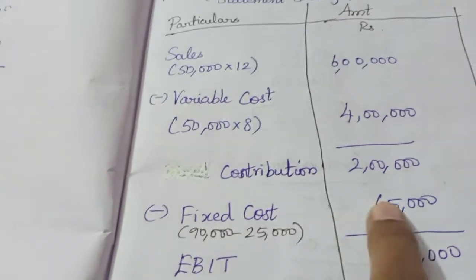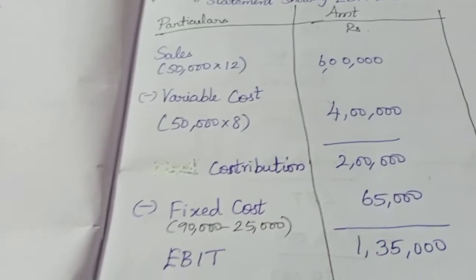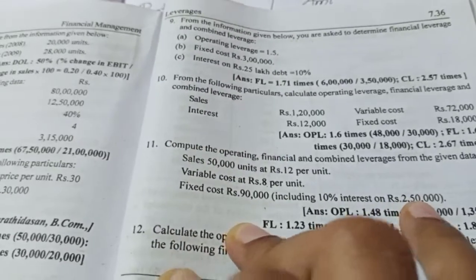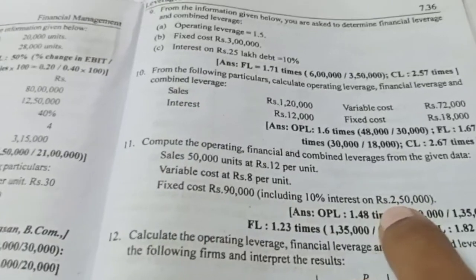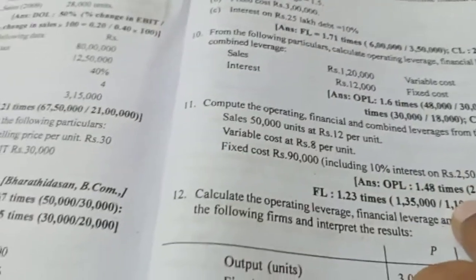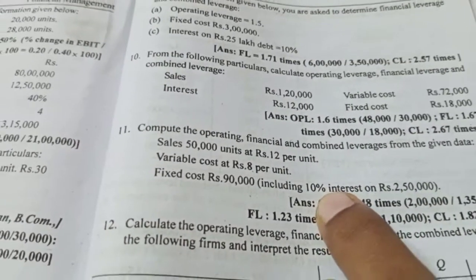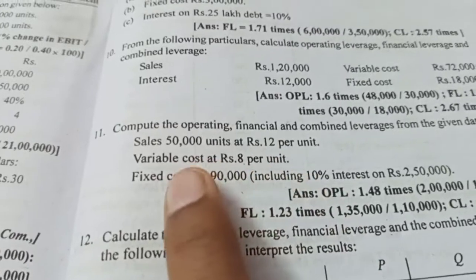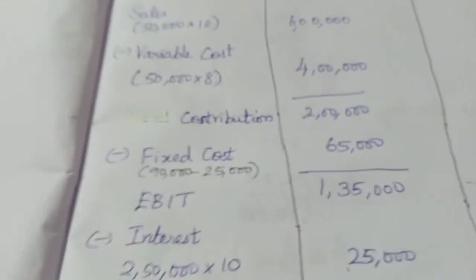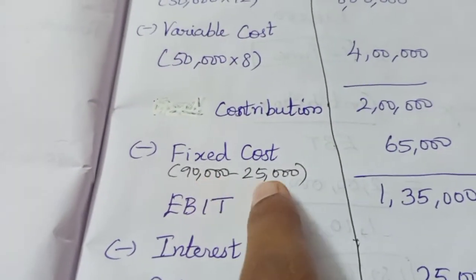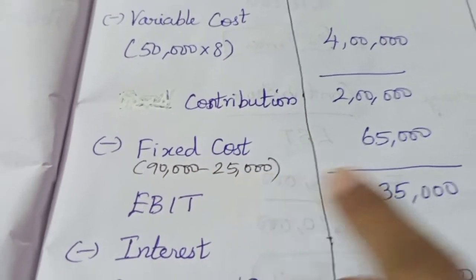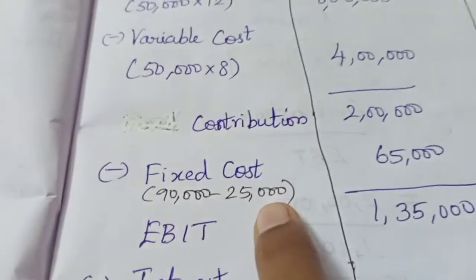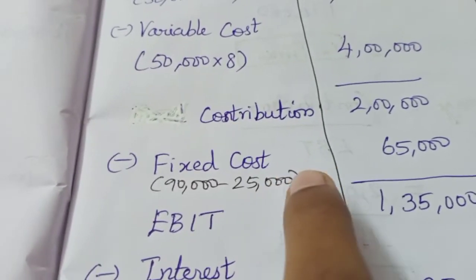Now for Fixed Cost: the given fixed cost is Rs. 90,000, but interest is already included in it. We calculate interest on Rs. 2,50,000 at 10%: 2,50,000 into 10 by 100 equals 25,000. So we subtract the interest from the total fixed cost: 90,000 minus 25,000 gives the actual Fixed Cost of 65,000. The 25,000 is the interest portion.